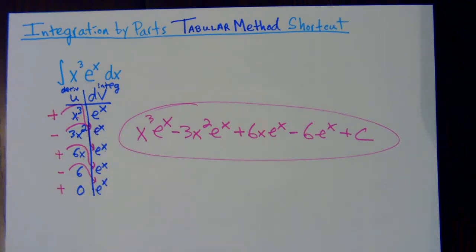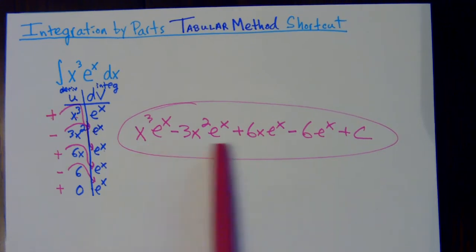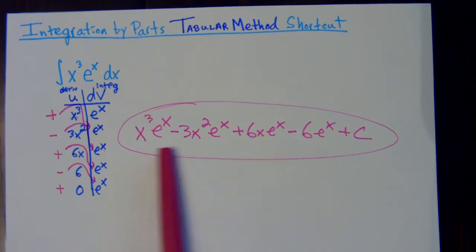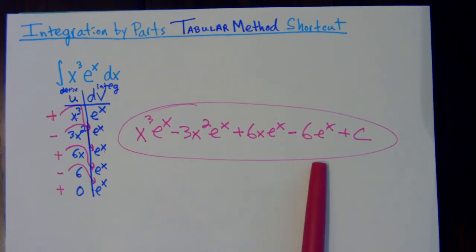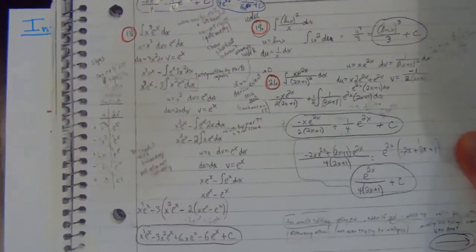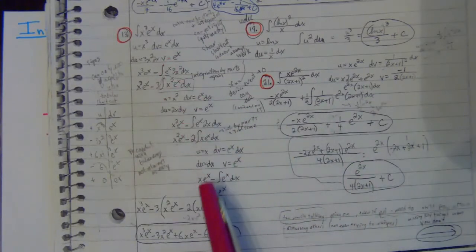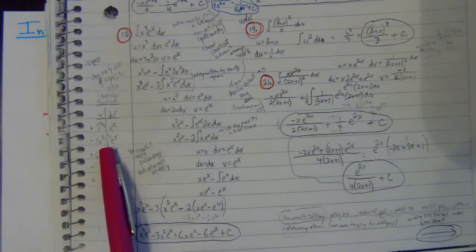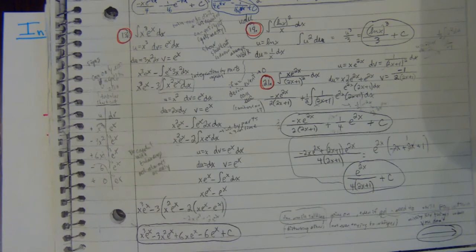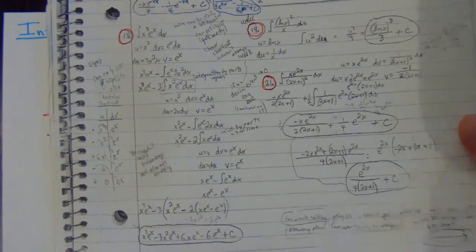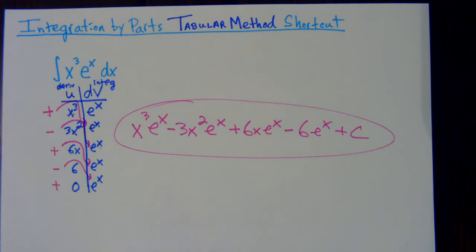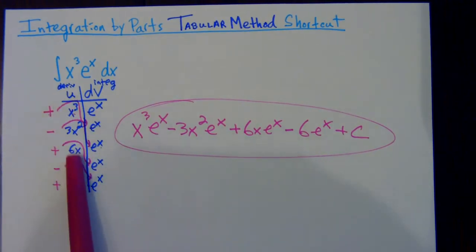If you compare this — this is actually number 13 in the homework — and you compare it with what you did on the prior assignment the long way, you're going to get that same answer. There's the work; it's a little bit messy but it gives the same answer. If you use the tabular method shortcut, you're going to get that same answer.